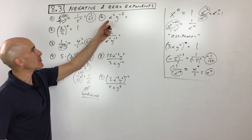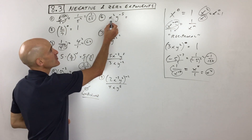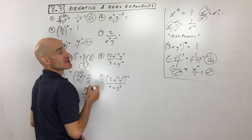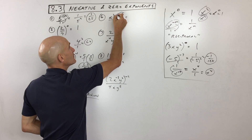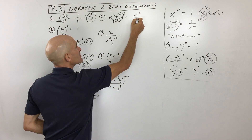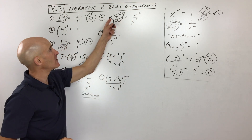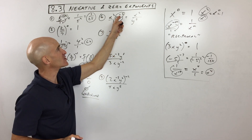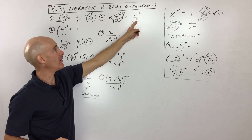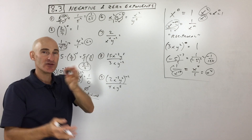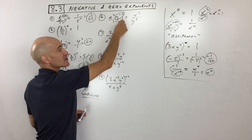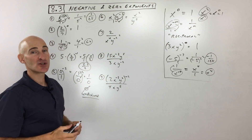Number 6: x² times y to the negative 5th. You can think of this as a fraction over 1. The negative exponent tells us to move that term to the other side of the fraction bar. The x² has a positive exponent so it stays; only the y moves to the denominator, becoming y to the positive 5. So the answer is x²/y⁵.